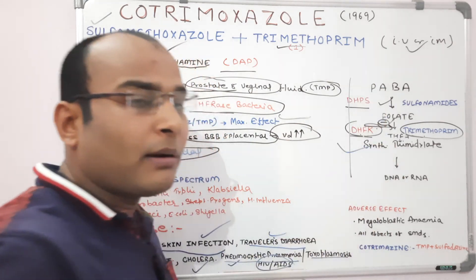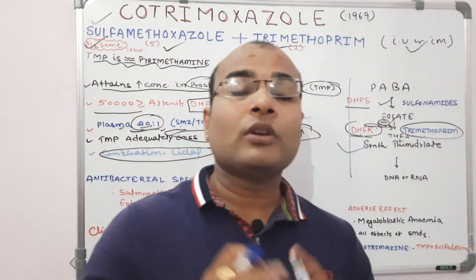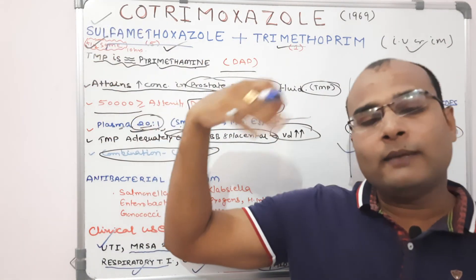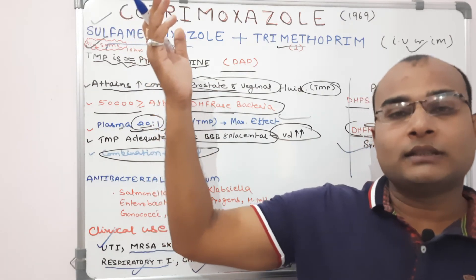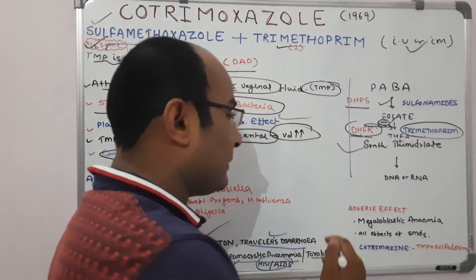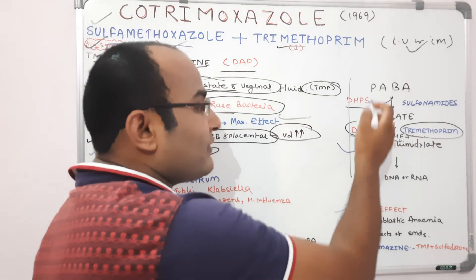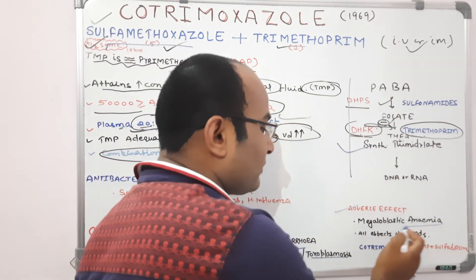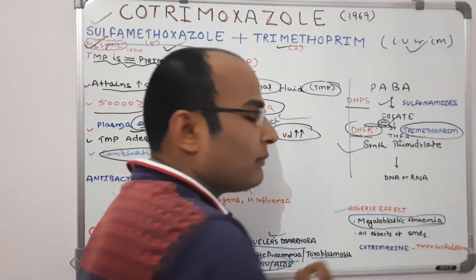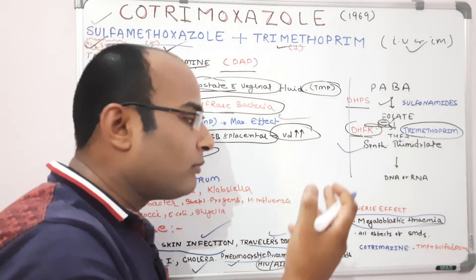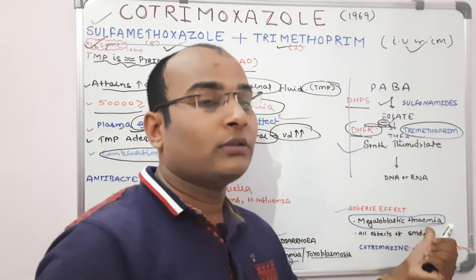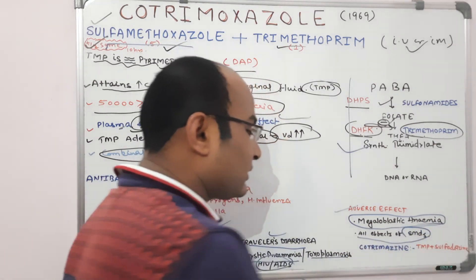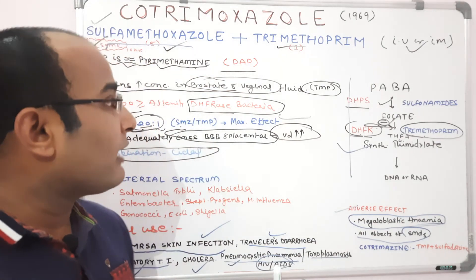Regarding adverse effects: most adverse effects come from the Sulfamethoxazole component, which is a Sulphonamide derivative, so the same adverse effects as discussed under Sulphonamides will be seen. Additionally, because we are inhibiting folic acid synthesis, inhibition of folic acid is responsible for megaloblastic anemia, as red blood cells become deformed. Cotrimoxazole came into consideration in 1969.